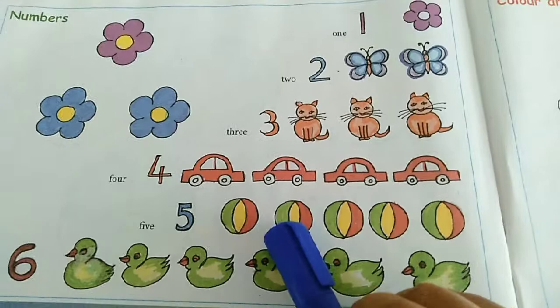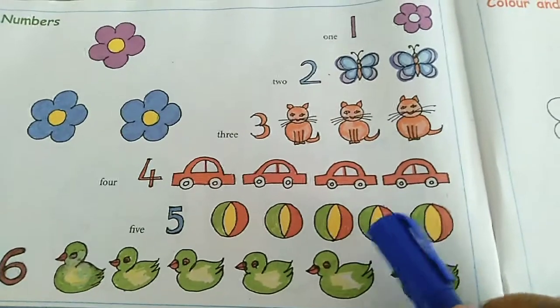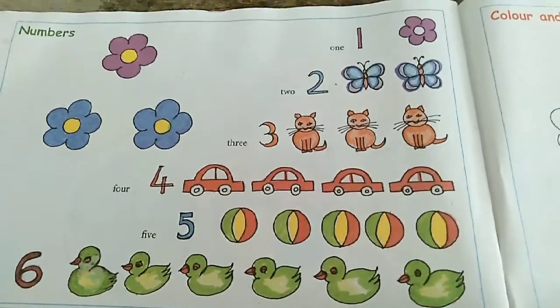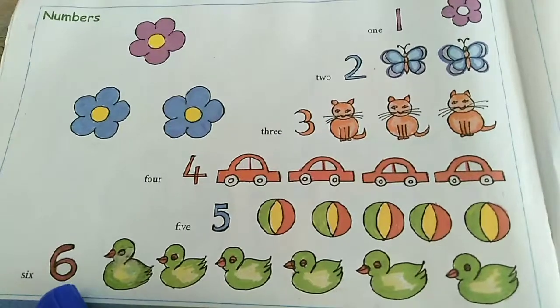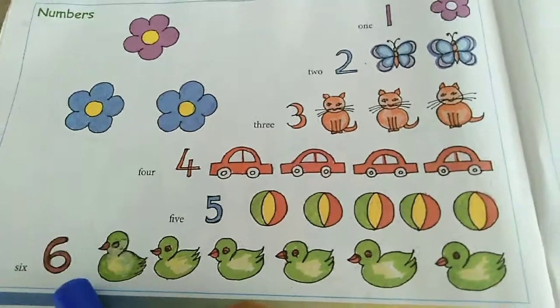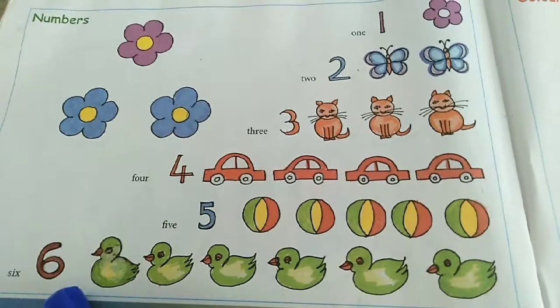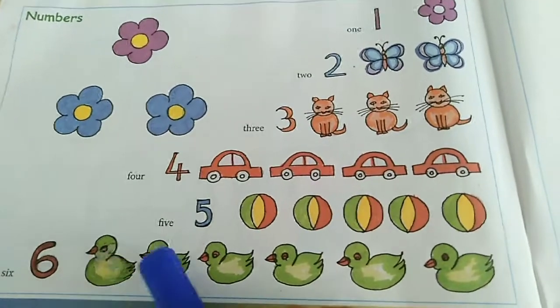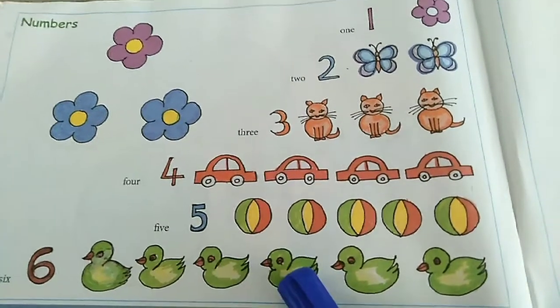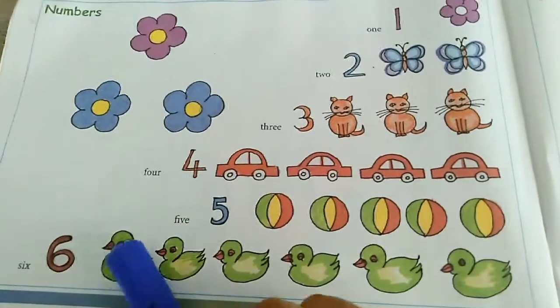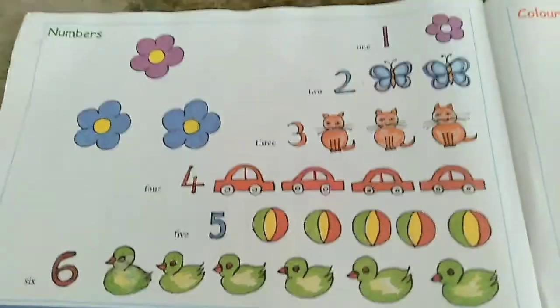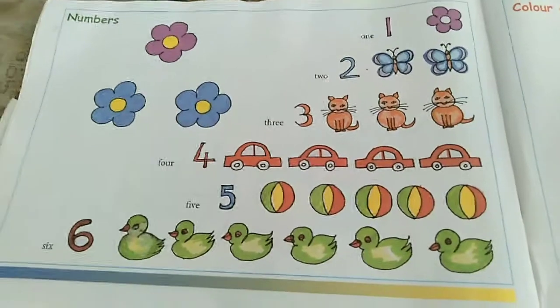There are five balls. Let's go to the final number. Number 6. They have given you ducks. One, two, three, four, five, six. There are six ducklings. Right, children, so we learned numbers.